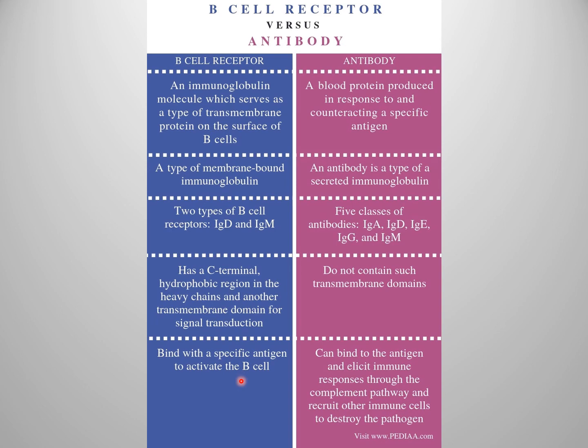The primary function of B cell receptors is to bind to a specific antigen and activate B cell differentiation and proliferation. Antibodies' primary function is to bind to an antigen and elicit an immune response through either the complement pathway or by recruitment of other immune cells to destroy that pathogen.